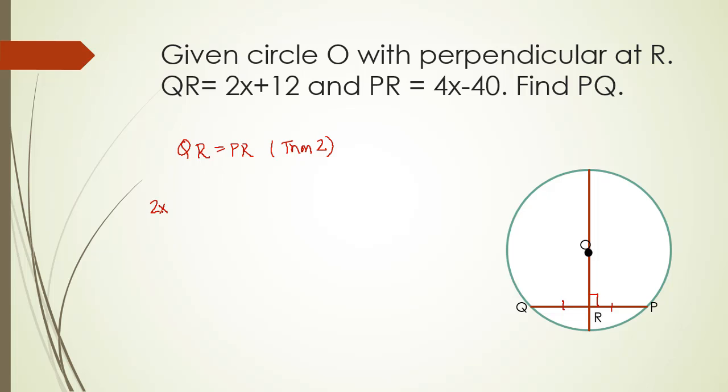Putting the values: 2x plus 12 equals 4x minus 40. Now we have to take the term with x on one side and all the constants on the other side. So I am taking this constant 12 here. This will change the sign of 12. Here it is positive 12, so if it goes on the other side it will become negative 12. Similarly, I am taking 4x to the other side. Here it is positive, so if it goes on the other side it will become negative. 2x minus 4x equals negative 52. Both are negative, so we will add them. 40 plus 12 is 52 with a negative sign. 2x minus 4x will be negative 2x equals negative 52. Now we can cancel out the negative sign from both the sides, and x will be 26.